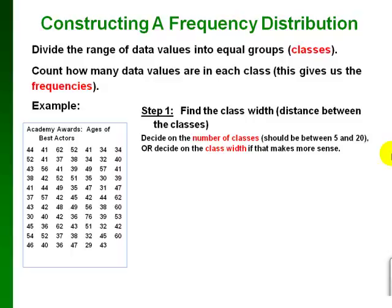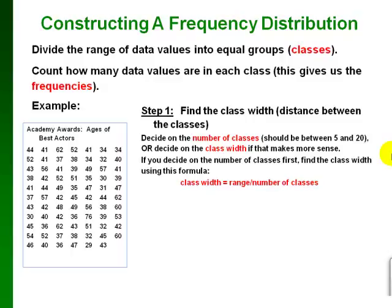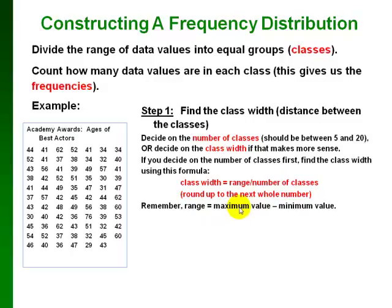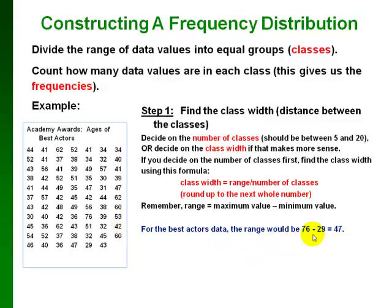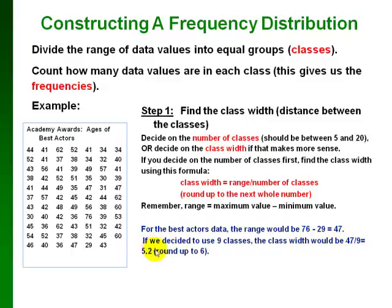We can start by deciding on the number of classes or by deciding on the class width. If you decide on the number of classes first, find the class width using: class width = range ÷ number of classes, then round up to the next whole number. The range is the maximum data value minus the minimum. For our best actor data, the maximum age is 76 and the minimum is 29, so the range is 47. Using 9 classes: 47 ÷ 9 = 5.2, which rounds up to a class width of 6.